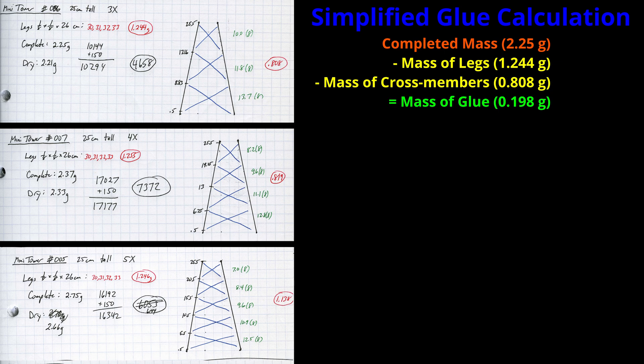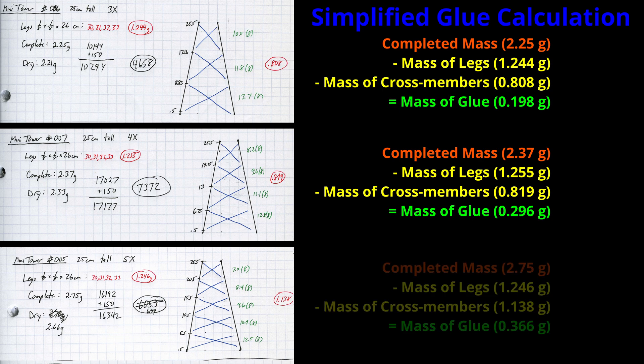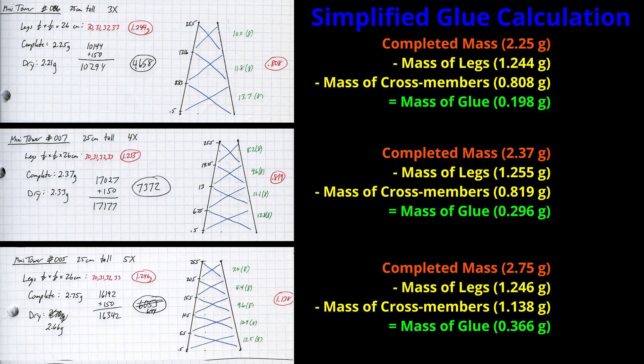The three layer tower has 60 glue joints, 15 per side. The four layer one has 80 total glue joints and the five layer one has 100. If we take the final mass and subtract the material mass of the legs and the cross bracing, we are left with the glue mass. In this case, you can see that each time I added a layer, it added almost 0.1 grams of glue.